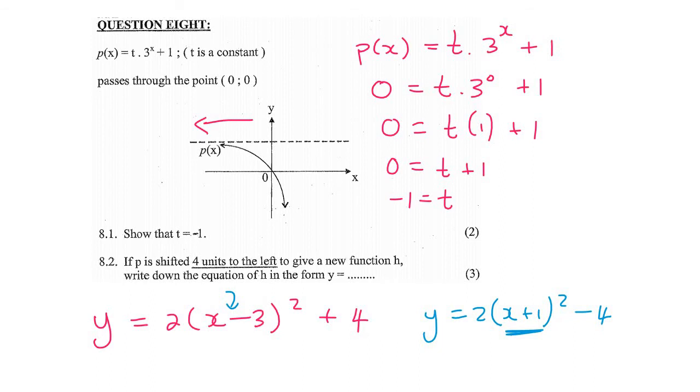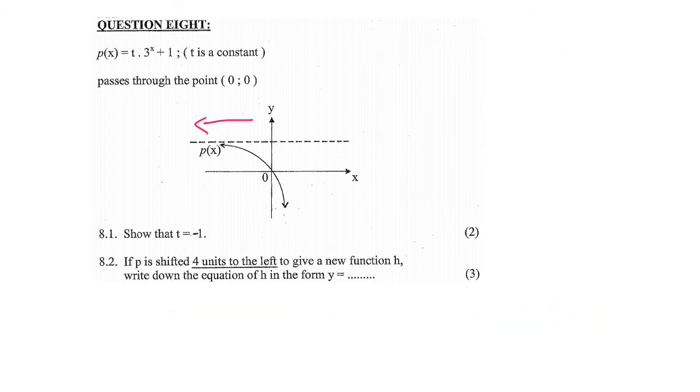So if you're going to move this thing four units to the left, then I'm going to ask you: is it going to become y equals minus 1 times 3^(x+1) plus 4 like that, or is it going to be y equals minus 1 times 3^(x+4) plus 1?